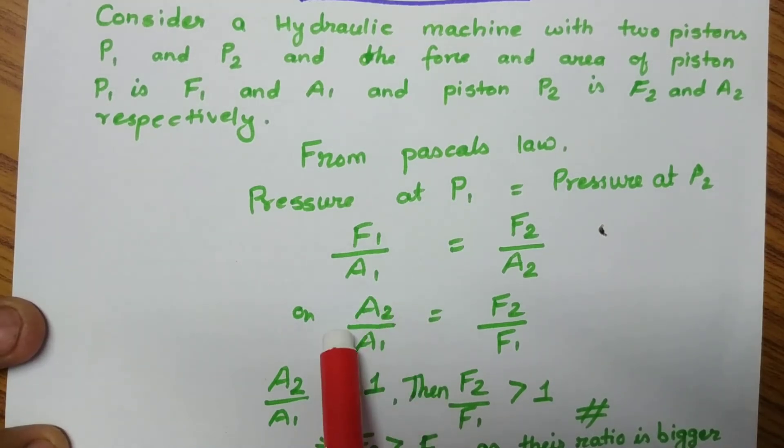So if this value is greater than 1, then F2 by F1 should also be greater than 1, because they are equal. For this to be true, we can say F2 should be larger than F1 - the force applied in piston 2 should be larger than the force applied in piston 1.